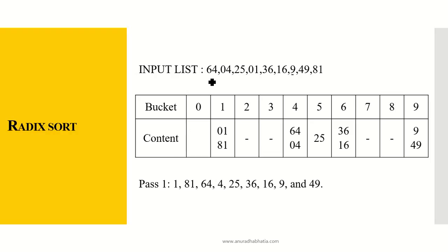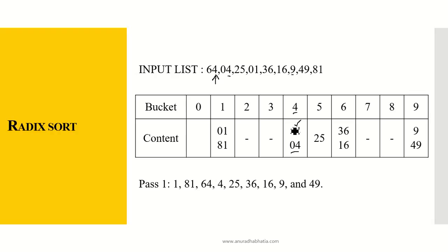Now let's start with 64. As the radix sort starts with the least significant bit, we will consider each element and put it in the respective bucket. The number is 64 — the least significant bit is 4, so it will go into bucket 4. So 64 comes over here. Next is 04 — least significant bit is 4, so it will come in bucket 4 as well, following 64. Next number is 25 — the least significant bit is 5, so it goes into bucket 5.